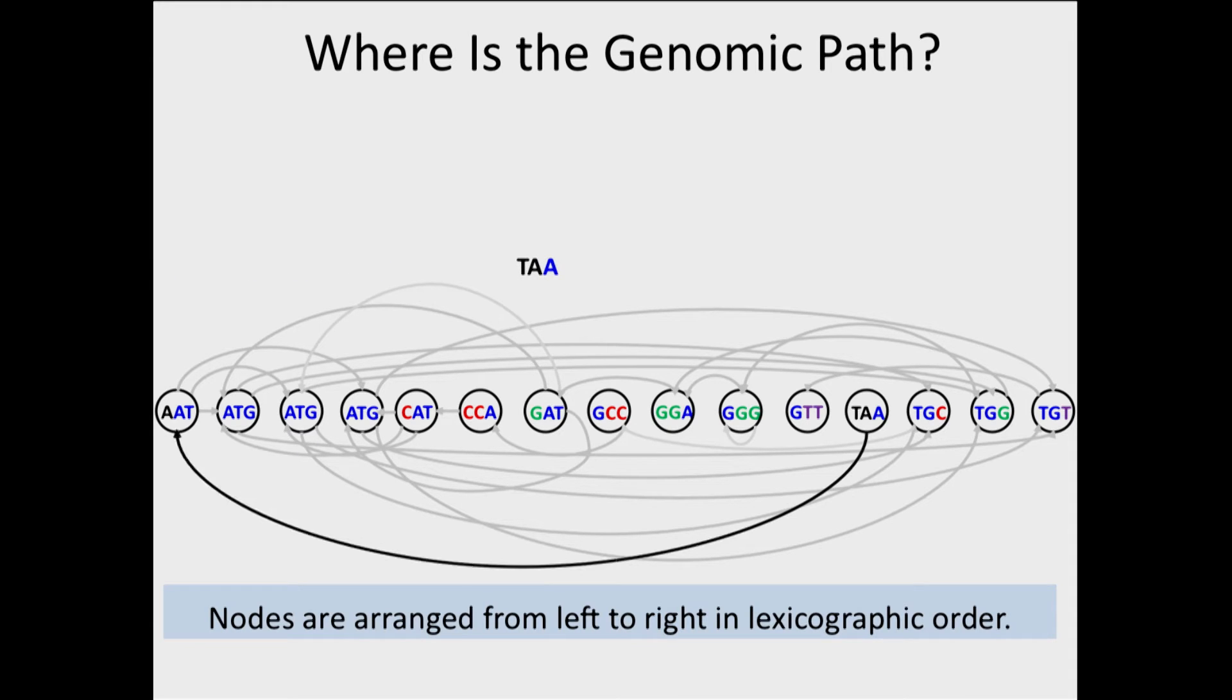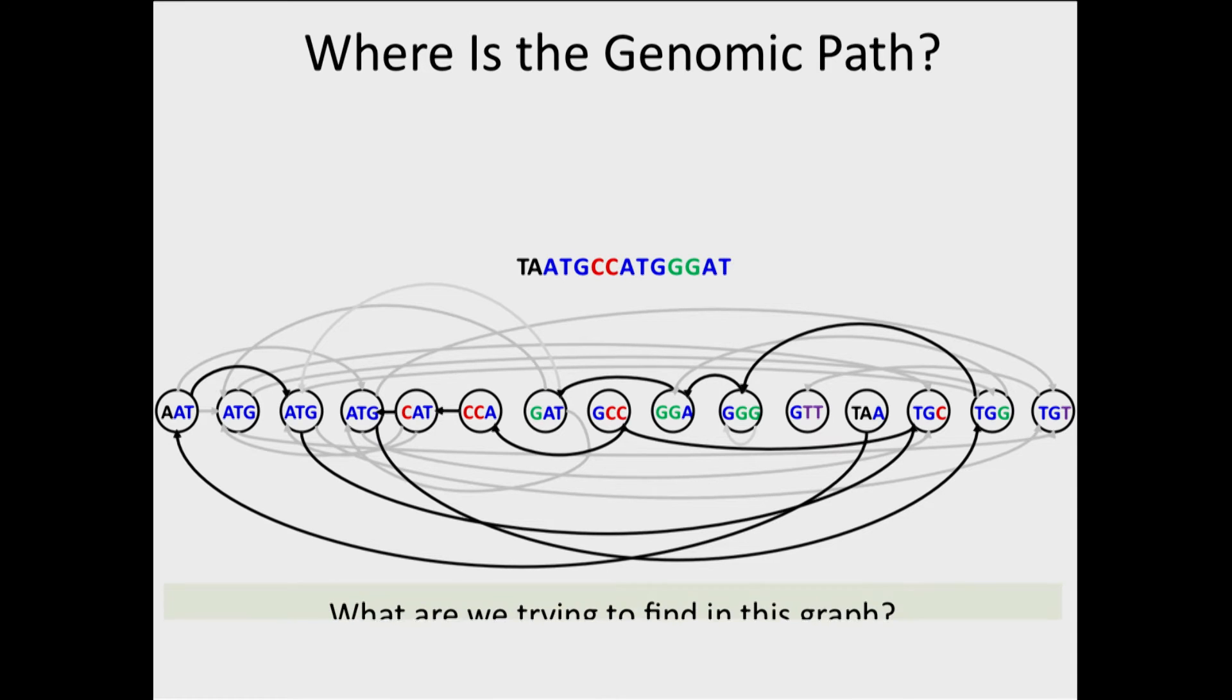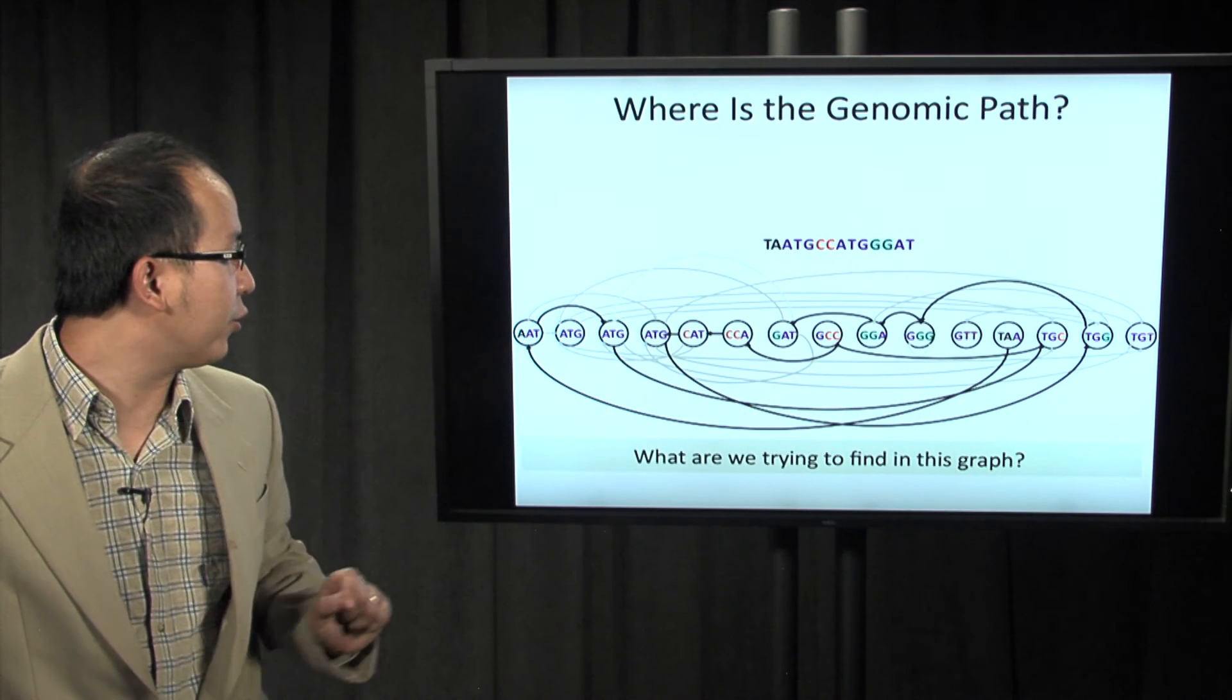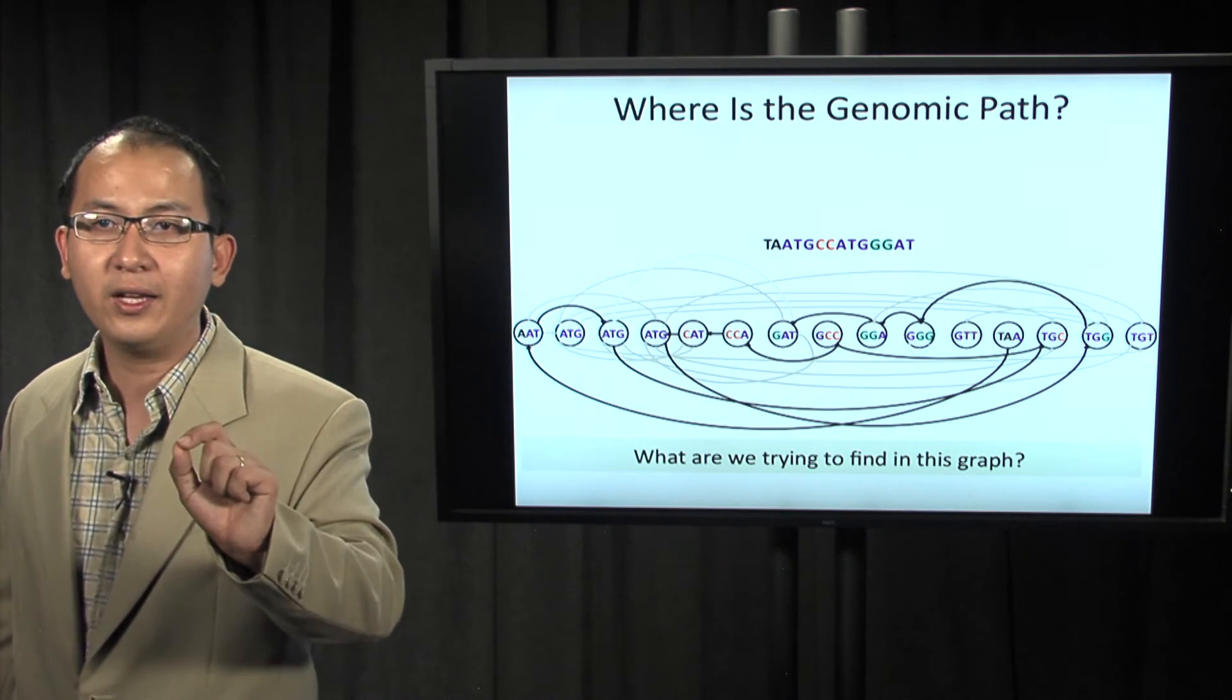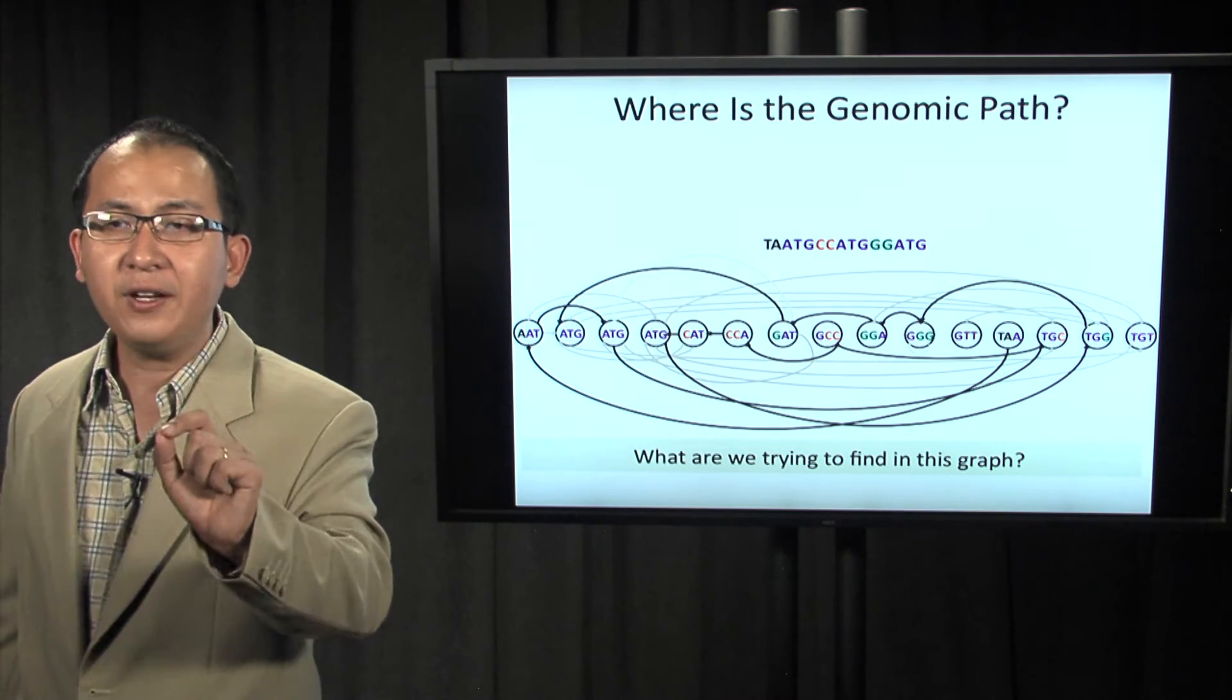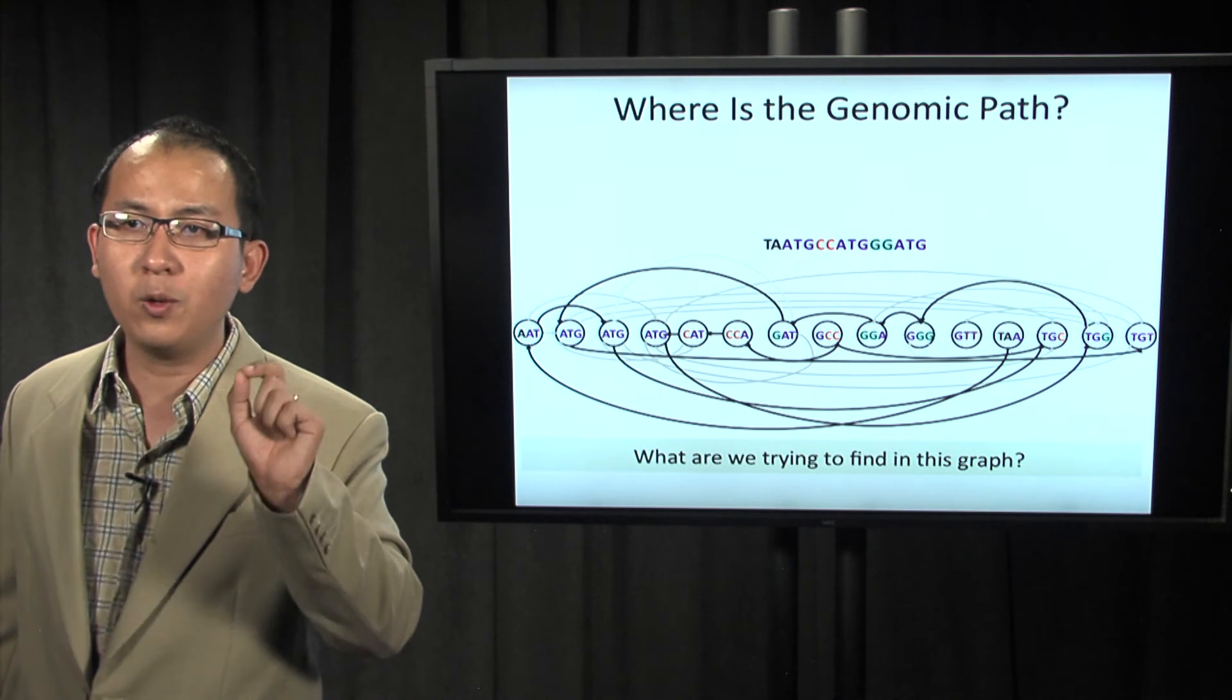The genome is actually a walk in this graph. What are we trying to find? We are trying to find a path that traverses every node exactly once.